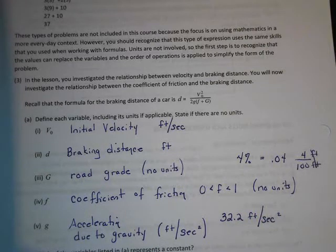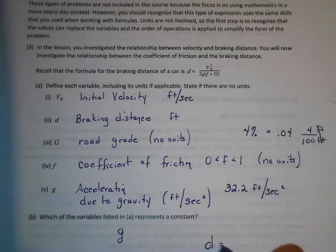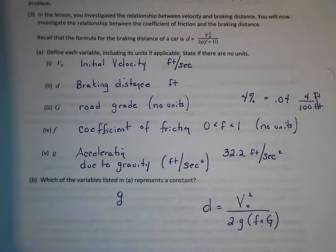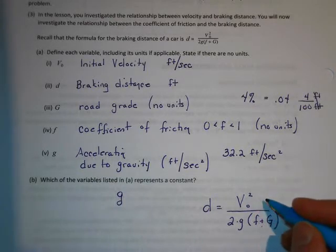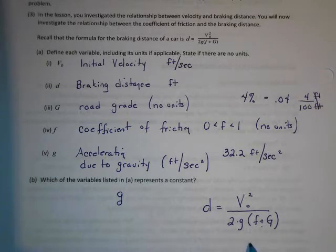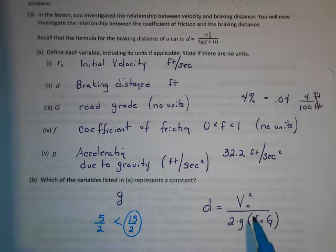Gravity g is a constant — it's always 32.2 feet per second squared. So g is the variable that represents a constant. Now let's talk briefly about why these variables are placed where they are in the formula. We want to look at velocity, friction, and the slope or grade.